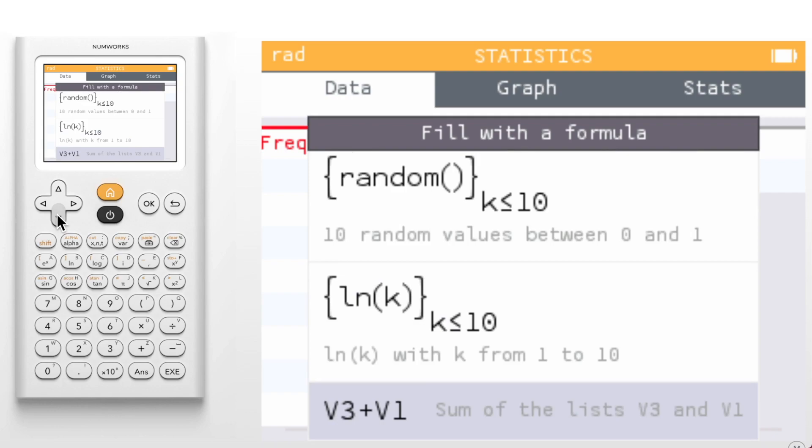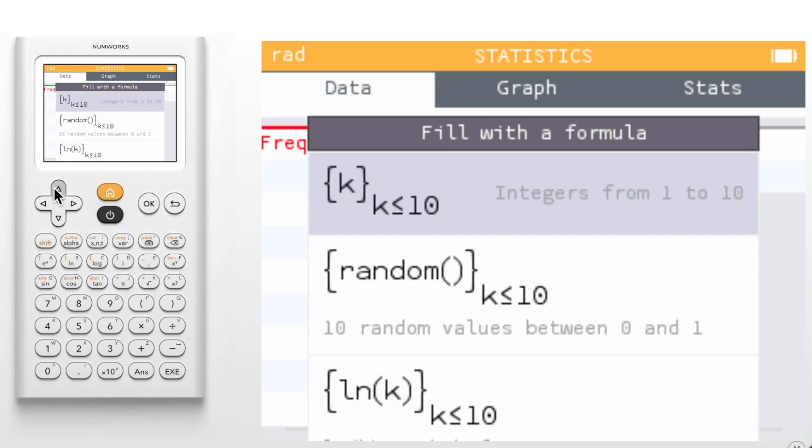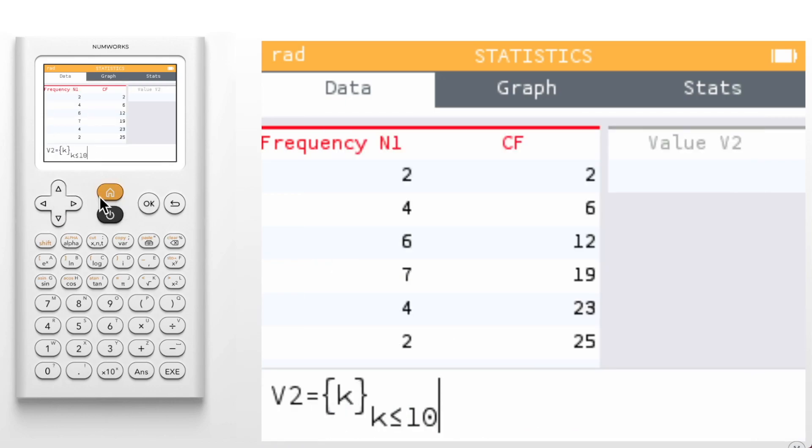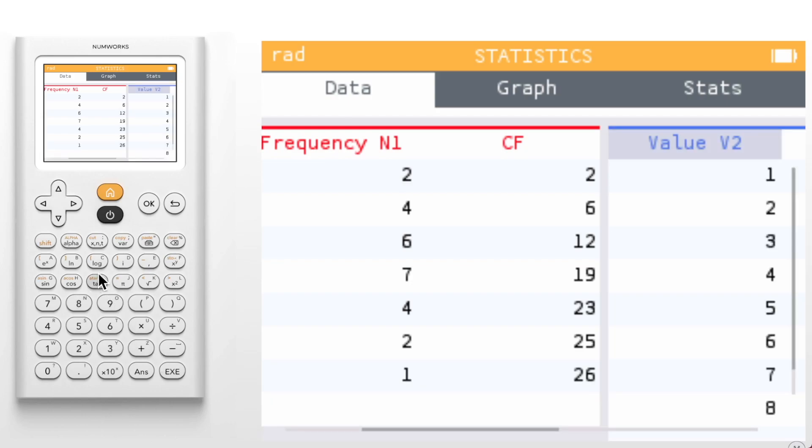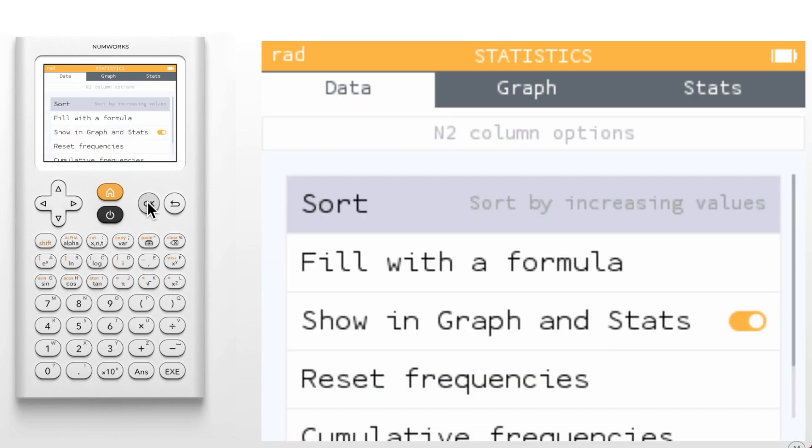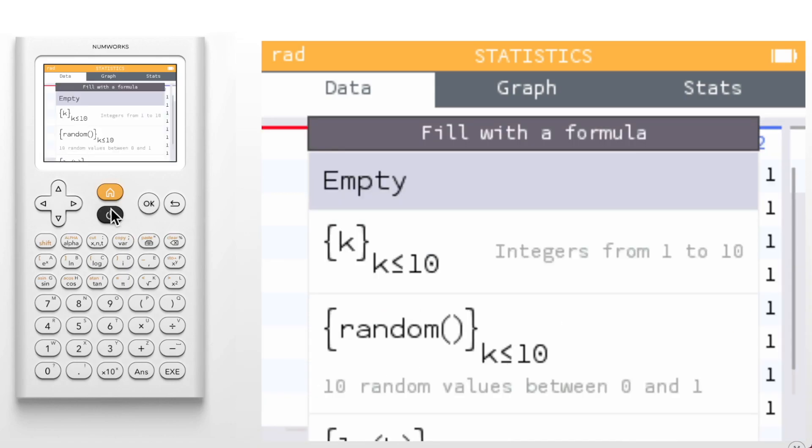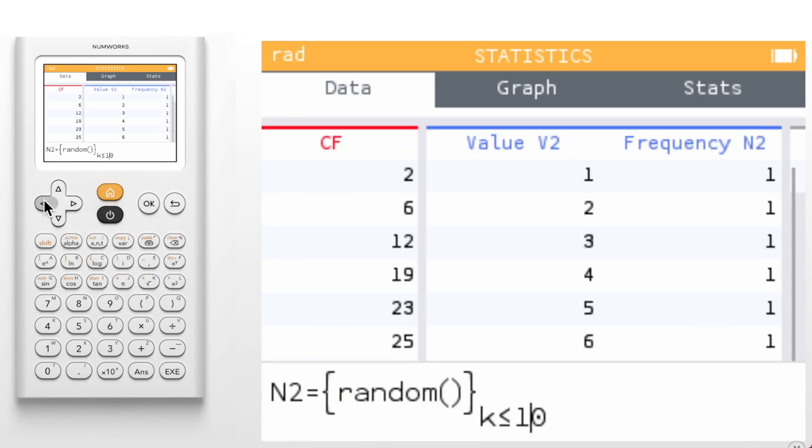Finally, the last template demonstrates that we can still reference other columns within the app. In fact, we can even reference columns in the regression app, or other lists defined elsewhere. Let's use the first template to generate a list of integers from 1 to 8. For the frequency, we'll again use our column options to create a formula. This time, we'll use the random template, but let's change it to random int from 1 to 20 using the toolbox.